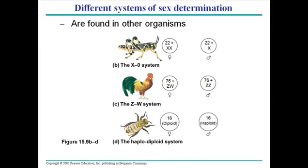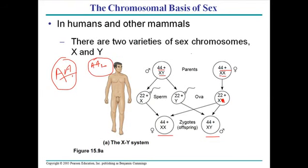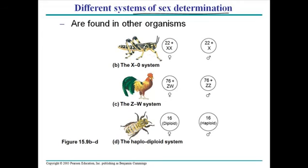Let's discuss some other systems of sex determination. In humans we have the XY determination system. In grasshoppers we have the X0 system — females have two X chromosomes and males have only one X with no Y chromosome at all. So grasshopper offspring distribution through XX gives all females.